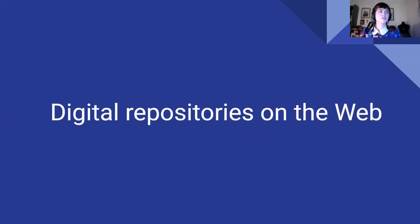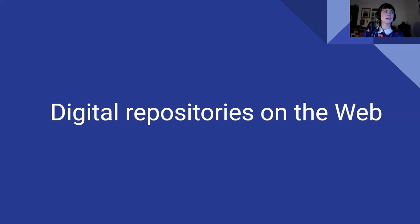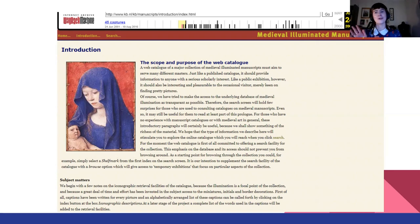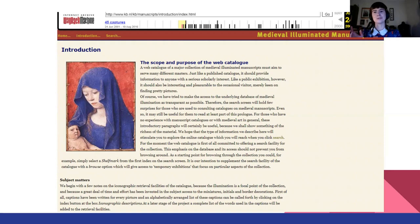Digital repositories — libraries, archives, galleries, or anyone who looks after digital material — have been present on the web since the existence of the web. Early examples include the Royal Library of the Netherlands' Medieval Illuminated Manuscripts page, which was basically a web page saying, 'Look at all this awesome stuff we have, come and visit us.' So the web was used at the start as a way to promote material and draw people into the institutions where it was kept.